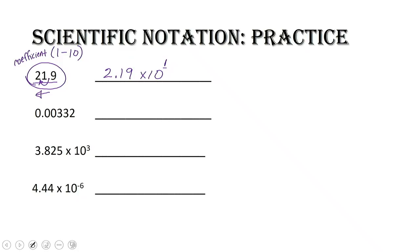The next number is 0.00332. This number is less than 1, and in order to get a coefficient between 1 and 10, you have to move the decimal to the right. We move the decimal place three spaces, giving us 3.32 times 10 to the what? We know we moved three spaces, but our number is less than 1, so our exponent must be negative — 10 to the negative 3.